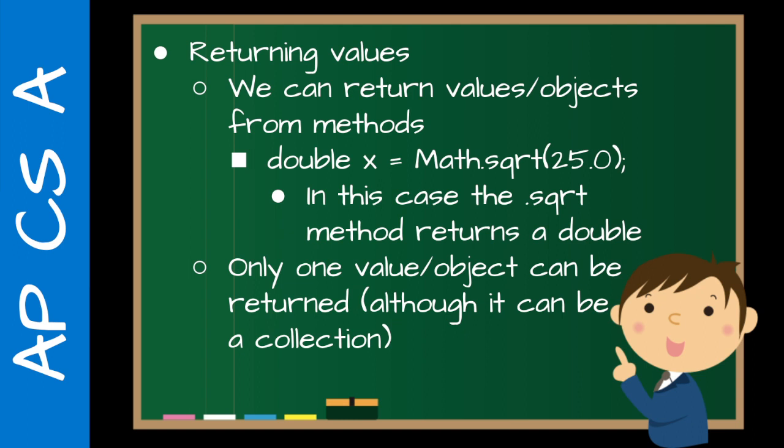So the value that we're sending is 25.0. And we're returning, of course, it'd be 5.0, which would then be assigned to x, which is also a double. In Java, only one value or object can be returned. So that could be a collection though. But I know, like for example, Python, you can return multiple values, which is kind of cool. But yeah, Java, you can't do that. So your Python students, if they're coming from Python, might be like, hey, why can't we do this? Because that's just the way it is.